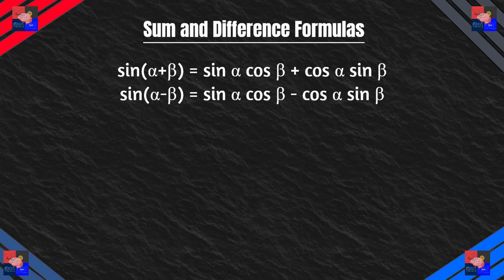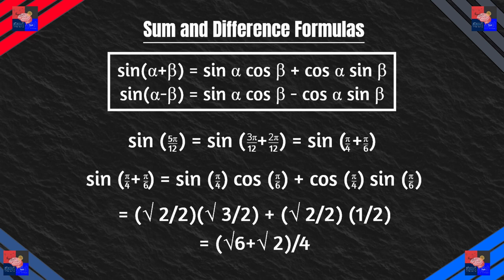Let's look over the sum and difference formulas for sine. Sine(α + β) equals sine α cosine β plus cosine α sine β. For subtraction it's basically the same thing but with the operation reversed. We can use these to express and solve for the sum of two common angles. Let's take a look at this example: sine of 5π/12.